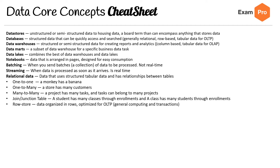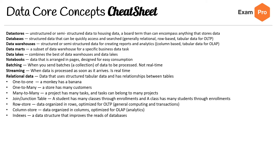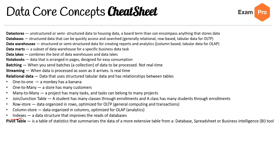Row stores are row-wise data organized in rows, optimized for OLTP. Column stores (columnar) organize data around columns, optimized for OLAP analytics. Indexes are data structures that improve the read performance of databases — this also appears under non-relational databases. Pivot tables are tables of statistics that summarize data from a more extensive table, database, spreadsheet, or BI tool.